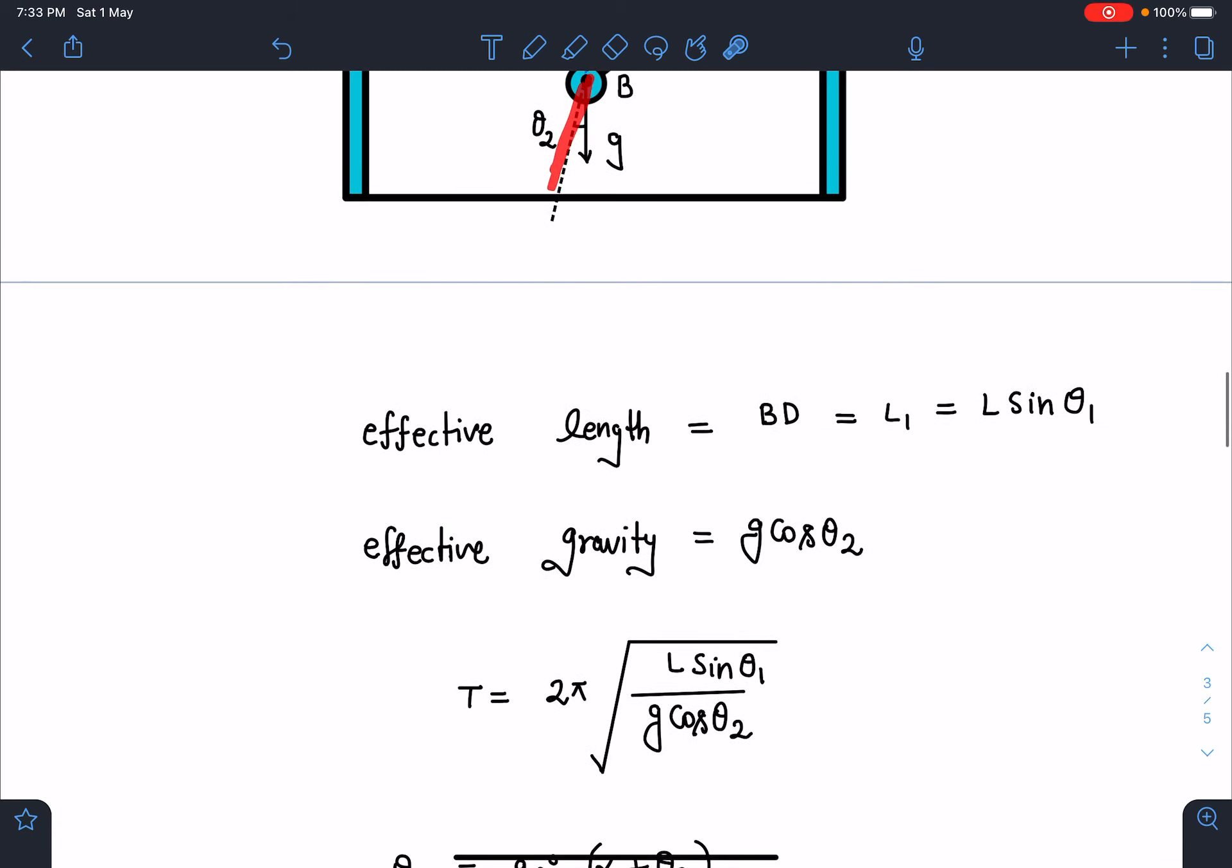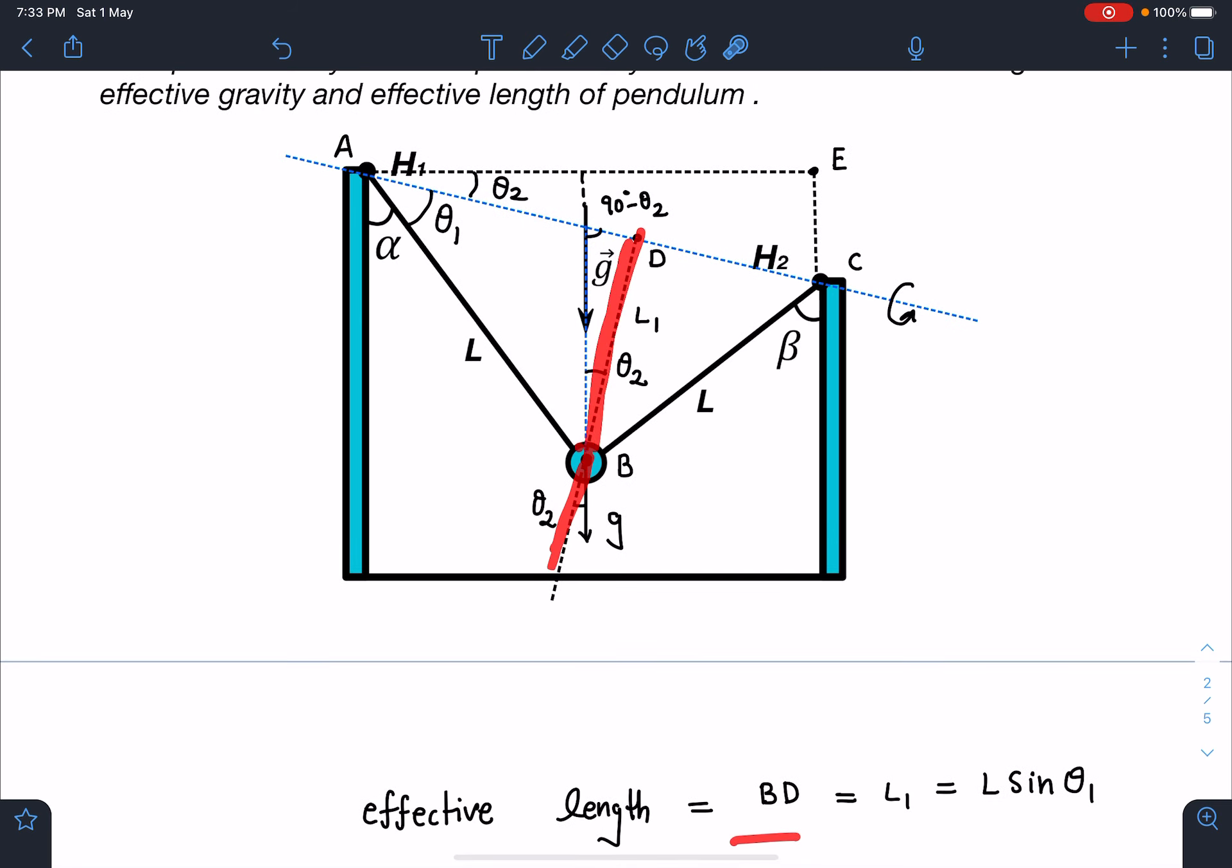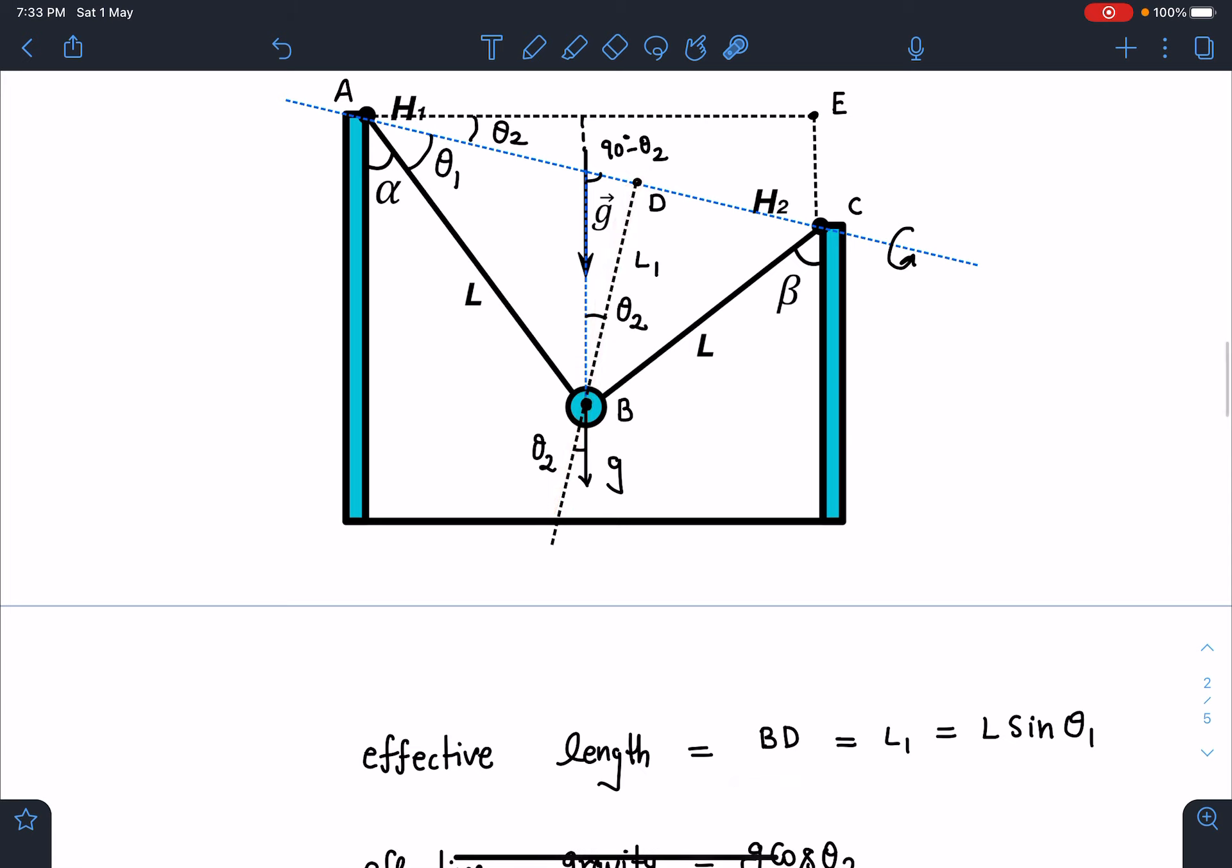So you can see here effective length is BD. B is this point and this length is D which is nothing but L1, or L1 is nothing but L sin theta1. Here you can see this is a right angle triangle. So this will become L sin theta1. This is the first part.